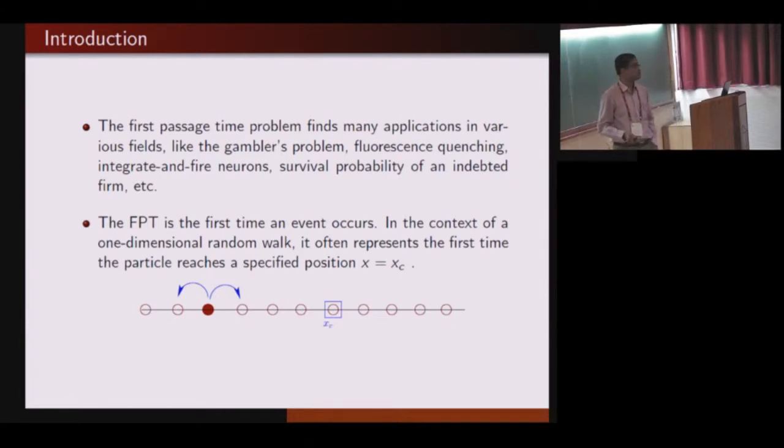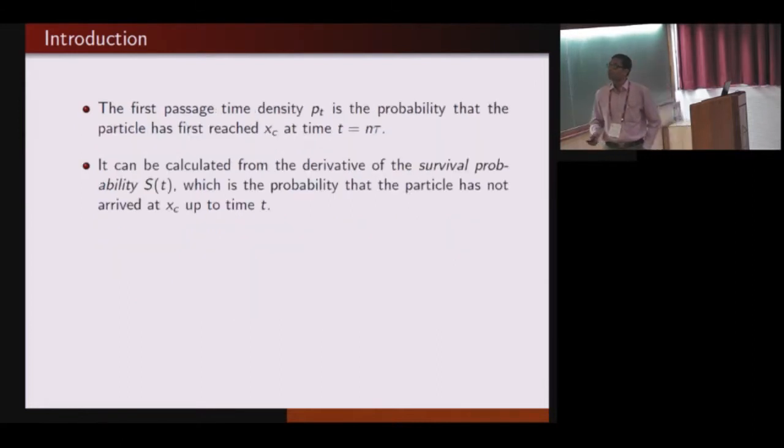This is a random phenomenon, so every time we repeat the experiment we will get different first passage times. So we can build a distribution, the first passage time probability. There is also the survival probability from which we can calculate the first passage time probabilities. If we take the derivative with respect to time, we get the first passage time corresponding to the classical walk.